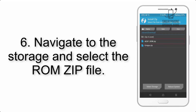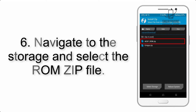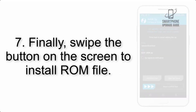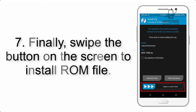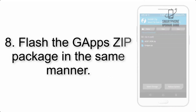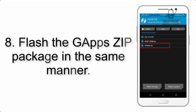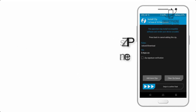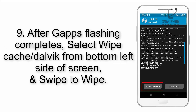Step 5: Go back to the recovery main screen and tap the Install button. Step 6: Navigate to the storage and select the ROM zip file. Step 7: Swipe the button on the screen to install the ROM file. Step 8: Flash the GApps zip package in the same manner.